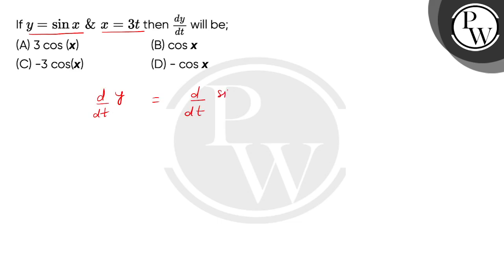sine x. Now here, x depends on t, means this problem is based on function of a function. So this will be d/dt of sine of 3t.